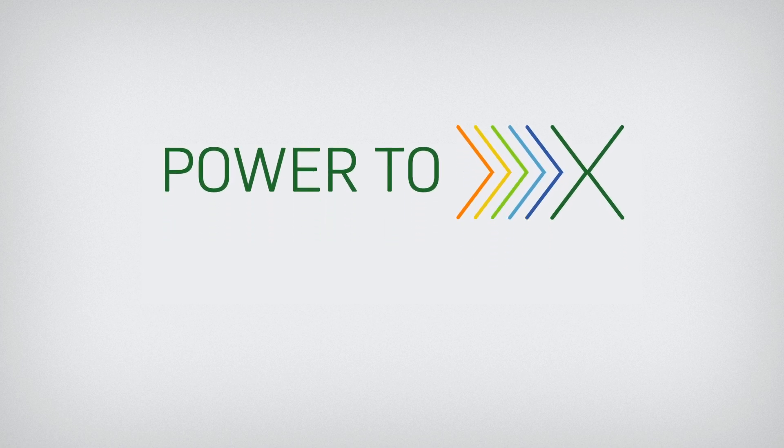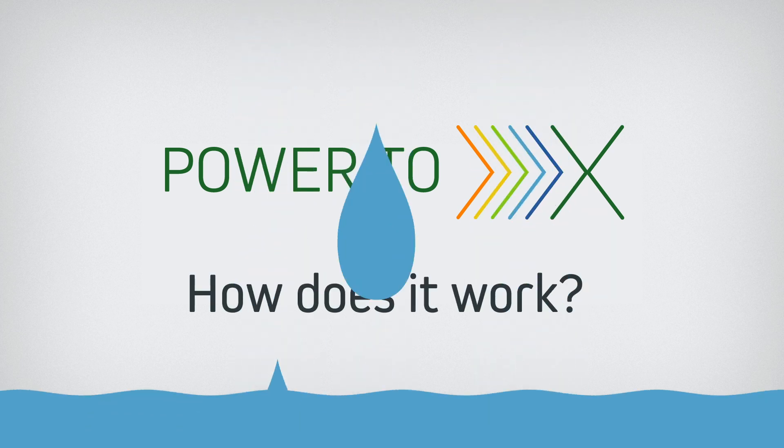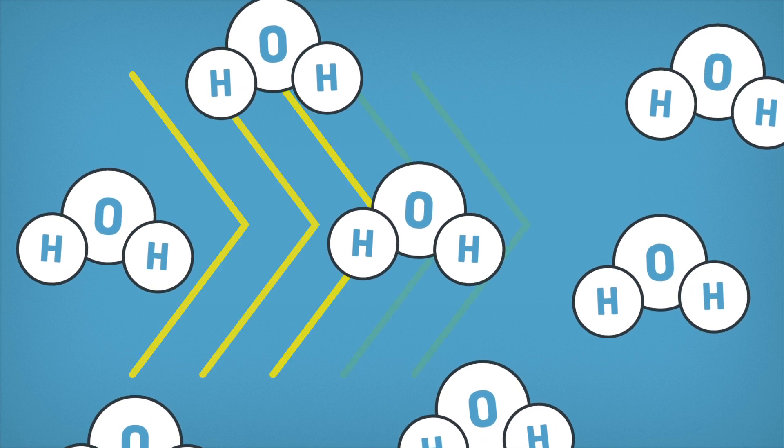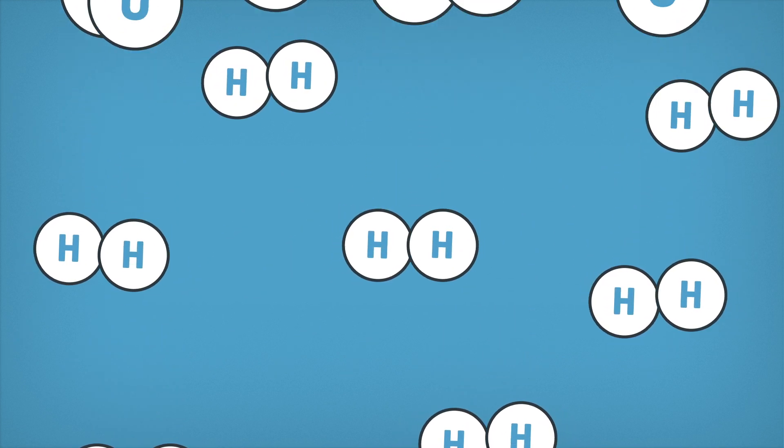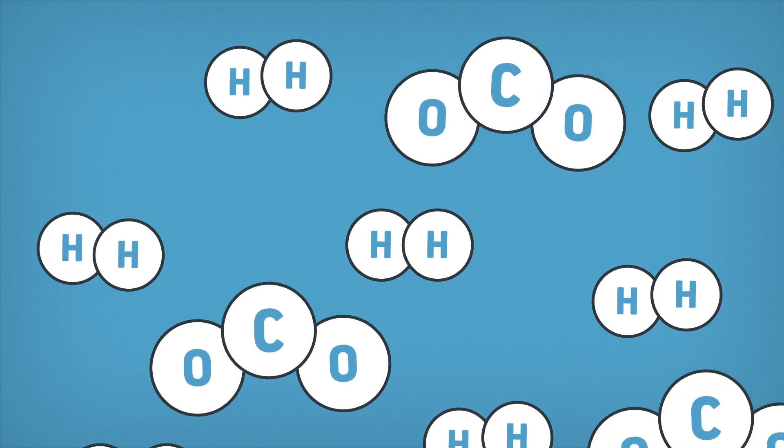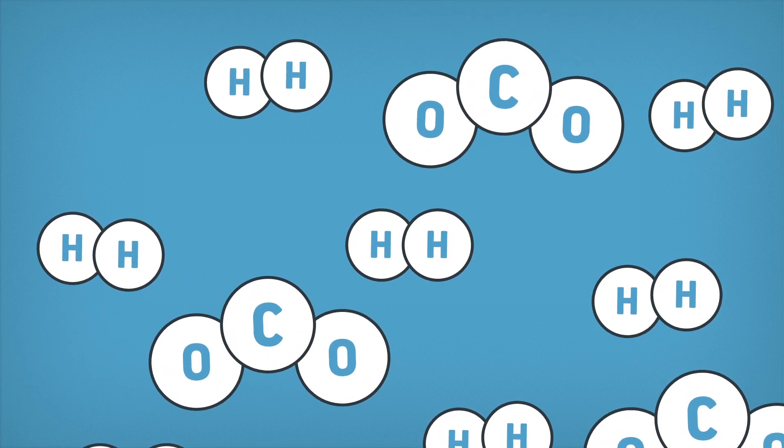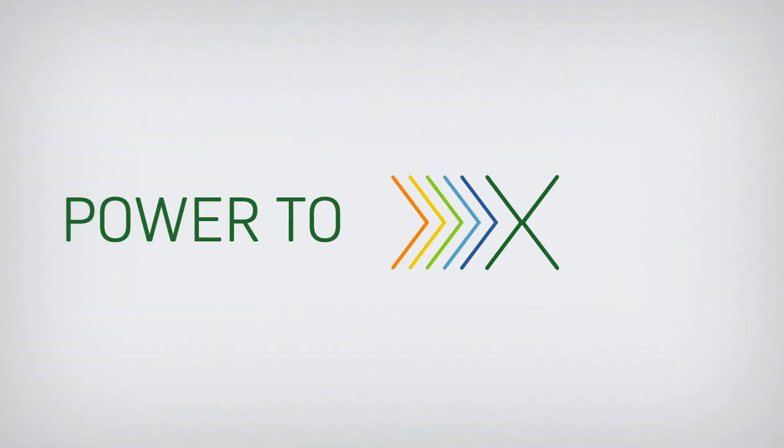Power2X, how does it work? First hydrogen is produced from water. This requires electric power generated by renewable sources. Then carbon dioxide is used to transform the hydrogen into either a gas or liquid to serve as fuel. This process is called Power2X.